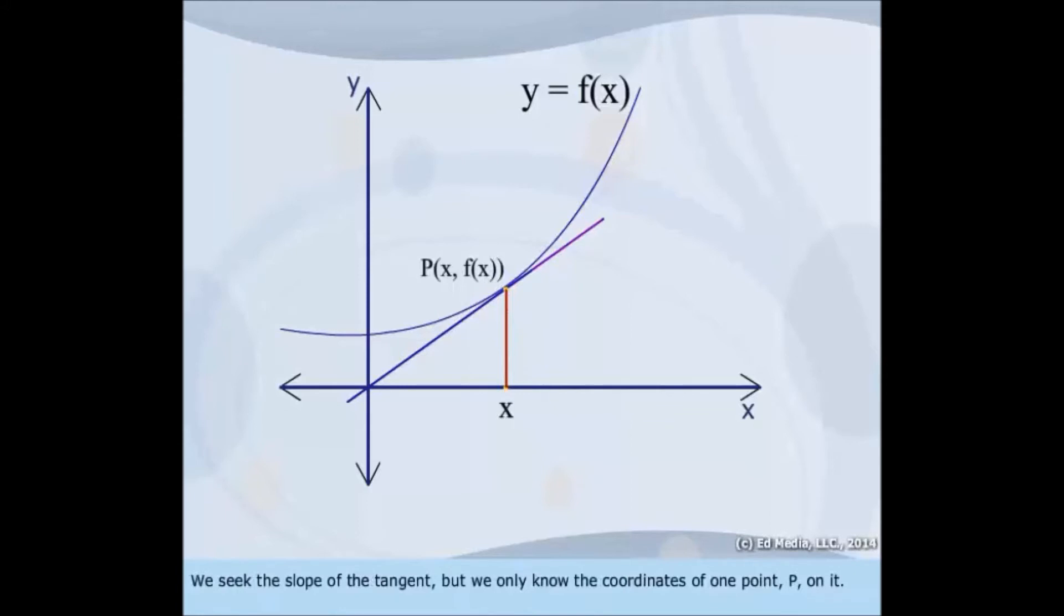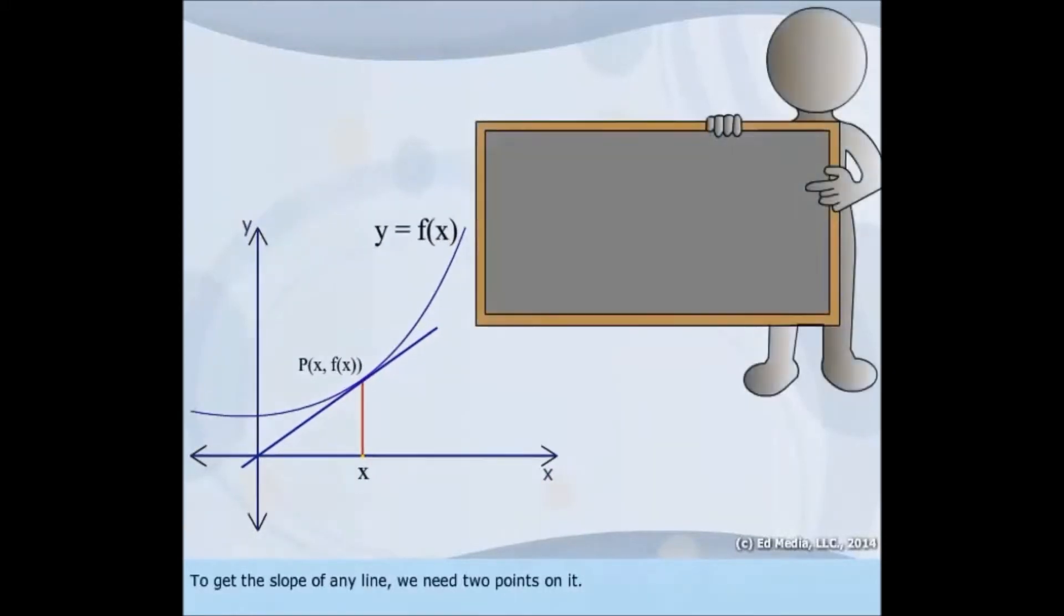We seek the slope of the tangent, but we only know the coordinates of one point, P, on it. To get the slope of any line, we need two points on it.